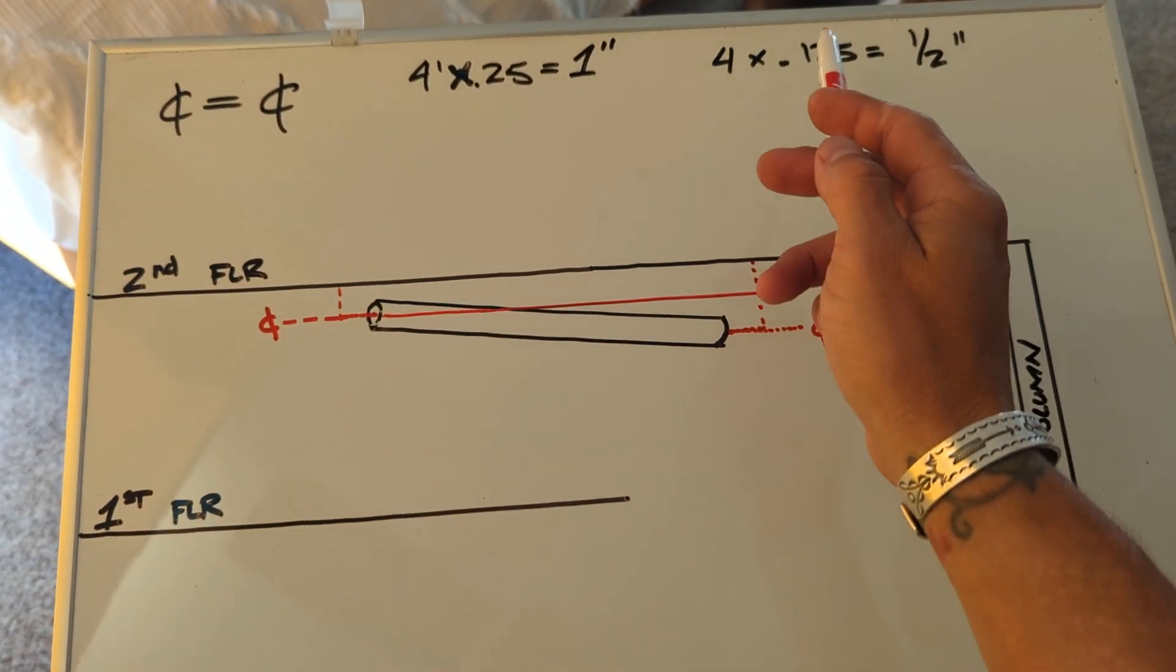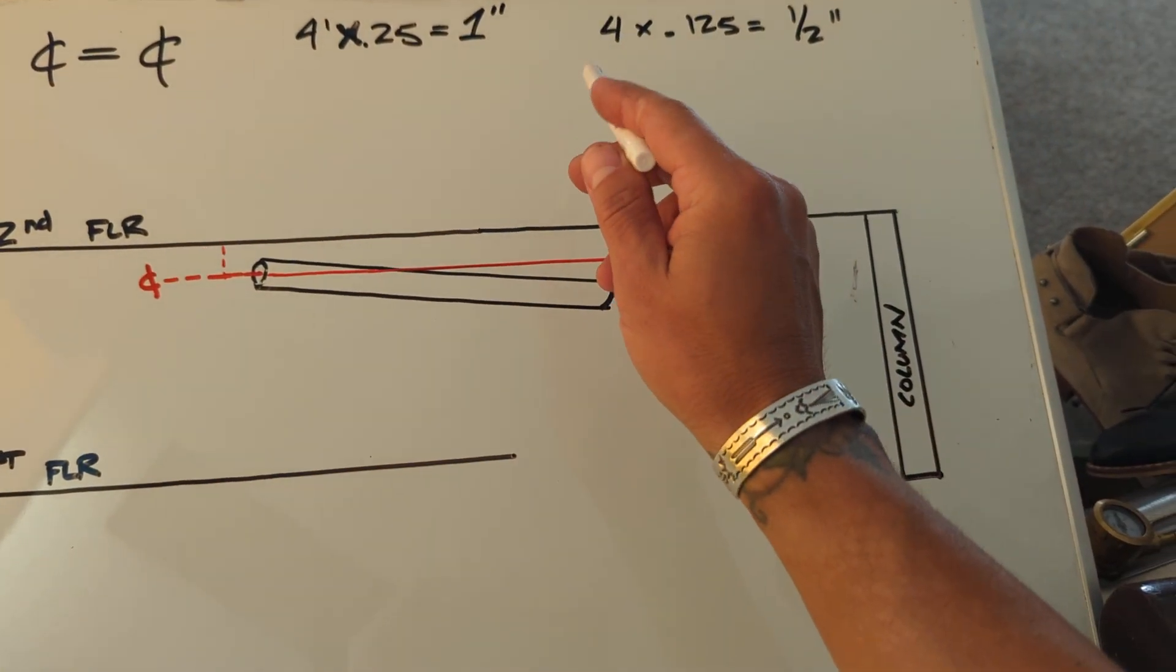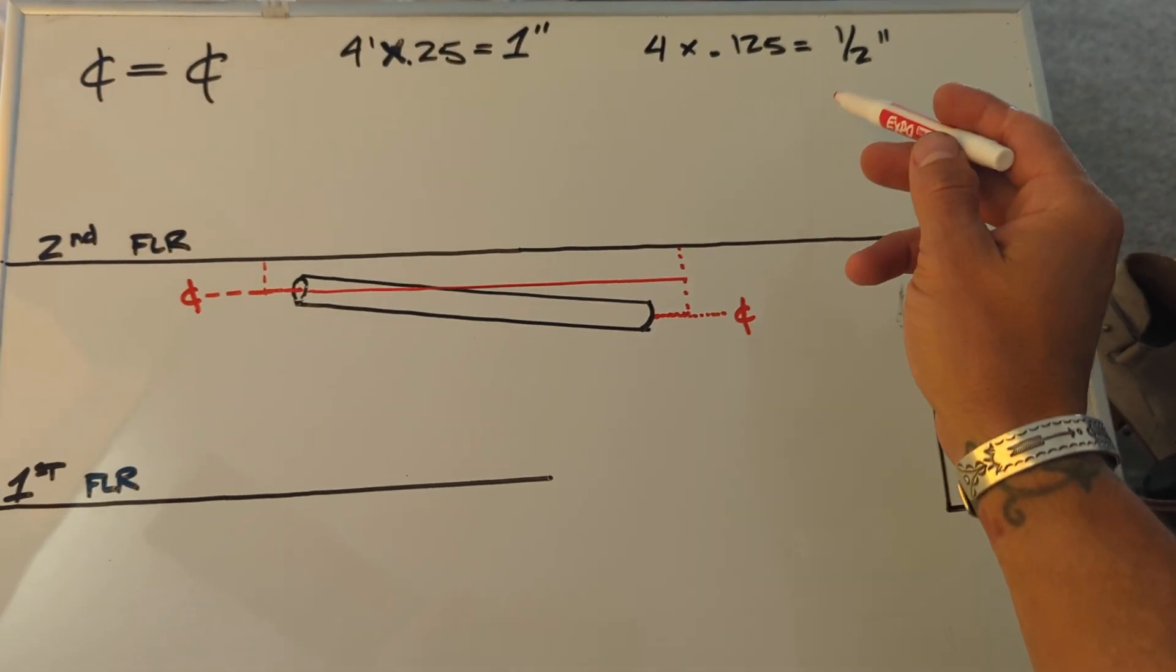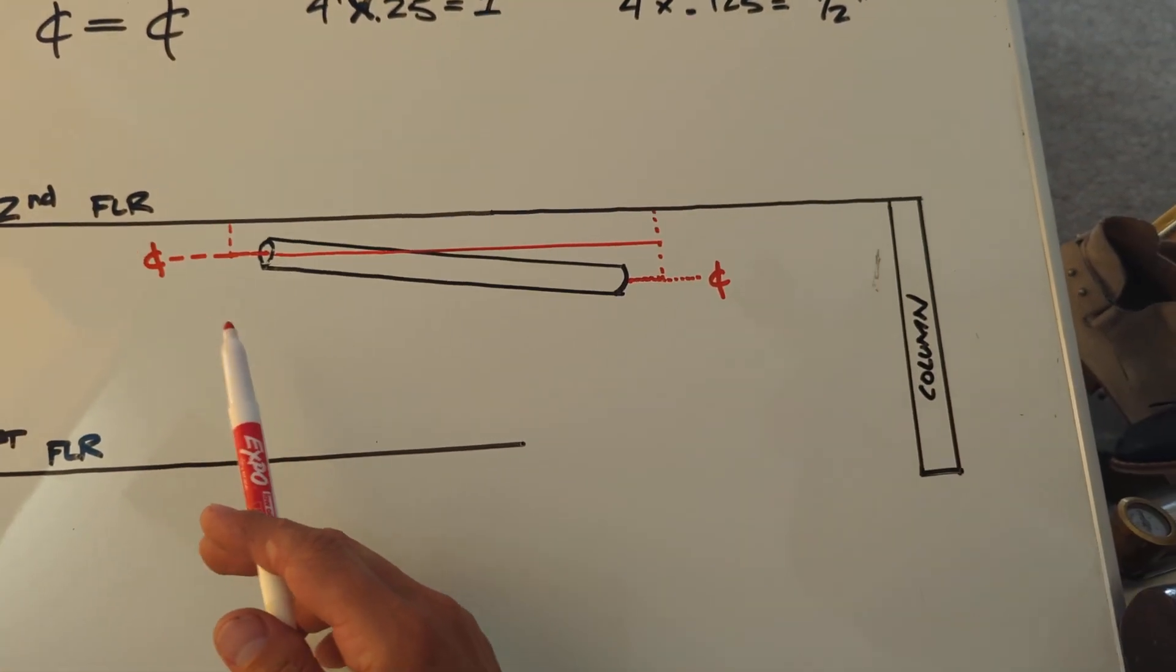If you do, say, an eighth of an inch, you have 4 feet times an eighth of an inch equals half an inch per foot. So when we're talking per foot, let's say this is your concrete ground right here.